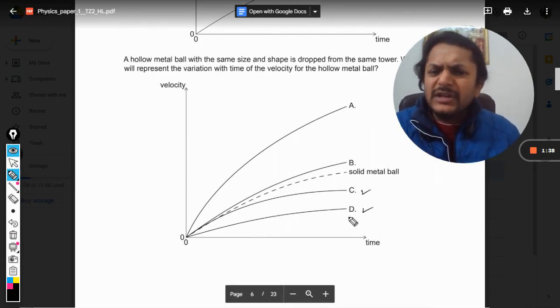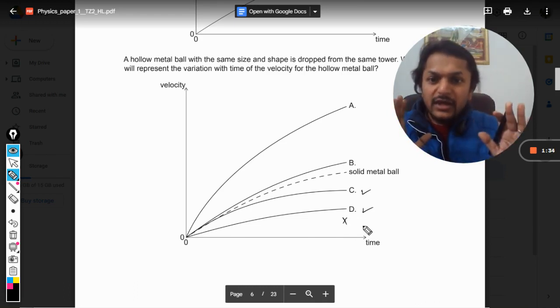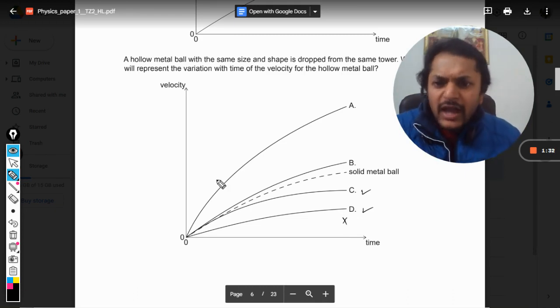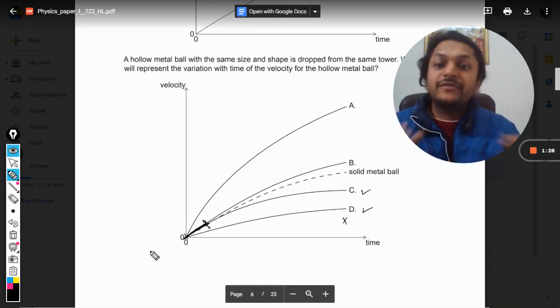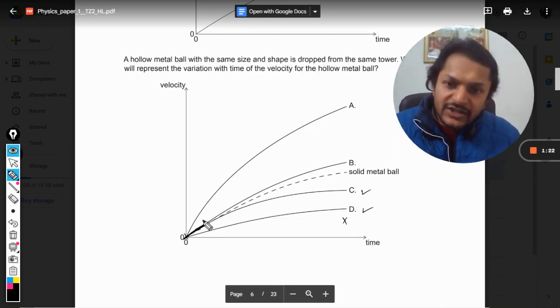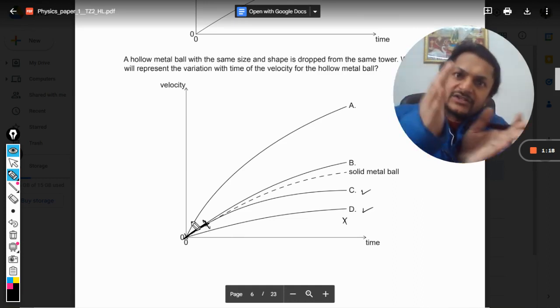But it cannot be D because it will not be that much lesser. Initially, for some initial time period, the velocities will be the same because our viscous force is anyways going to be equal to zero. Initially the velocities have to be same, but after some time there will be a difference. That is why our option will be C.